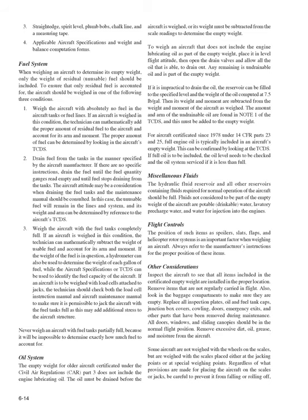Oil System: The empty weight for older aircraft certificated under Civil Air Regulations (CAR) Part 3 does not include engine lubricating oil; the oil must be drained or its weight subtracted. Any remaining undrainable oil is part of the empty weight. If impractical to drain, the reservoir can be filled and the weight of oil computed at 7.5 lb/gal, then its weight and moment subtracted. The amount and arm of undrainable oil are found in Note 1 of the TCDS. For aircraft certificated since 1978 under 14 CFR Parts 23 and 25, full engine oil is typically included in the aircraft's empty weight.